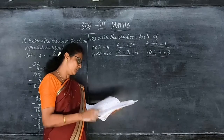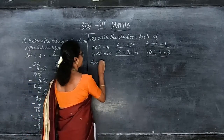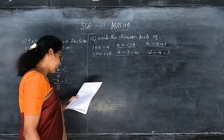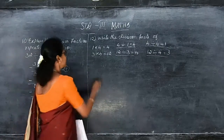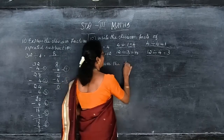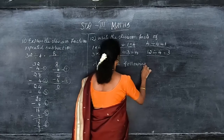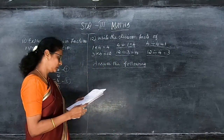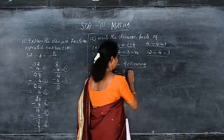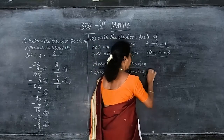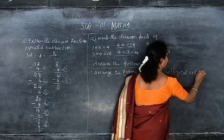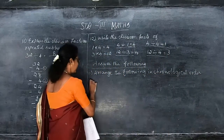Now we will move on to the problems. Answer the following. First one: arrange the following in chronological order. What is chronological order? So in this chronological order, I will get the sum like this.